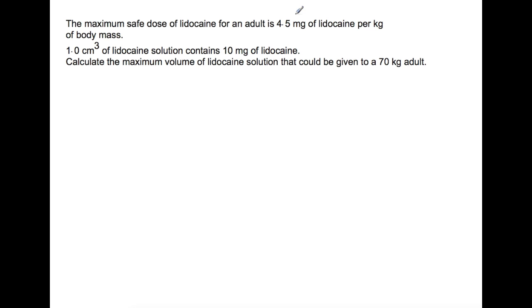So this example is based upon an anesthetic. The maximum safe dose of lidocaine for an adult is 4.5 milligrams per kilogram of their body, and one centimeter cubed of lidocaine you can get 10 milligrams of the actual compound itself. And you're to calculate the maximum volume of a lidocaine solution that you could give to an adult of a certain weight.